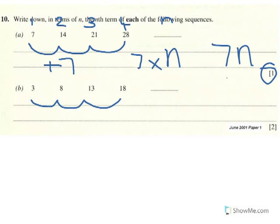Part b, we can see that this is going up by 5 each time. So let's add 5. That means I must be doing 5 times n. But obviously, 1 times 5 doesn't get me 3. 2 times 5 definitely doesn't get me 8. 3 times 5 doesn't get me 13.